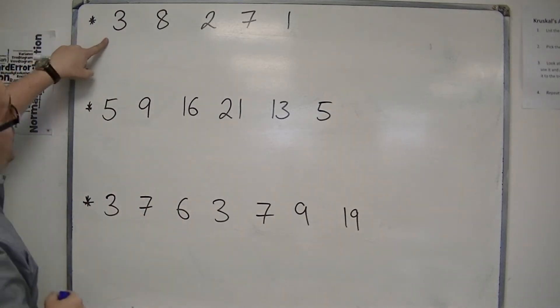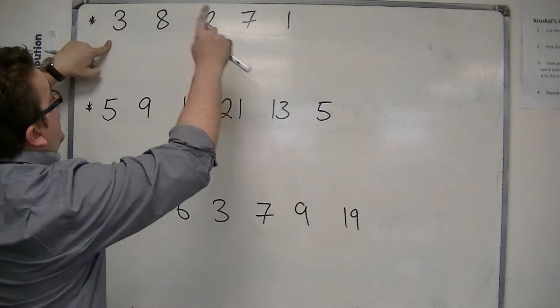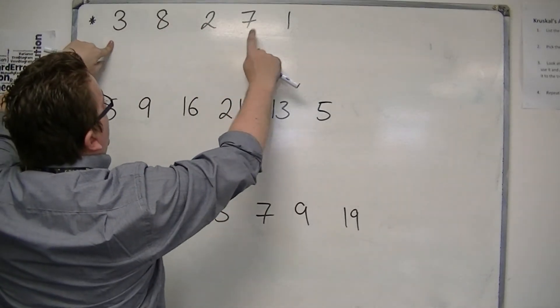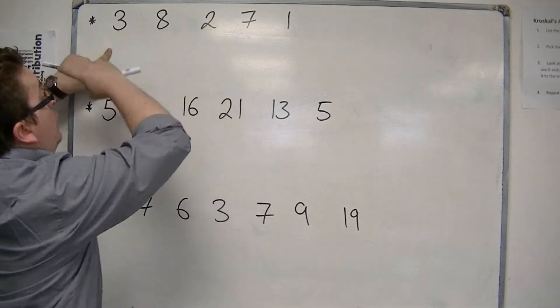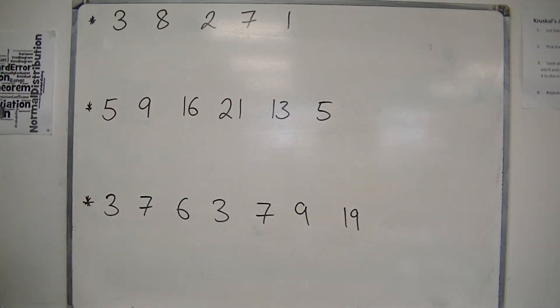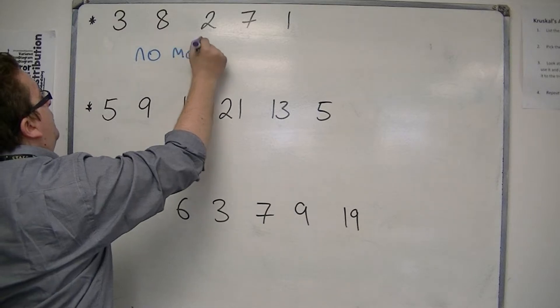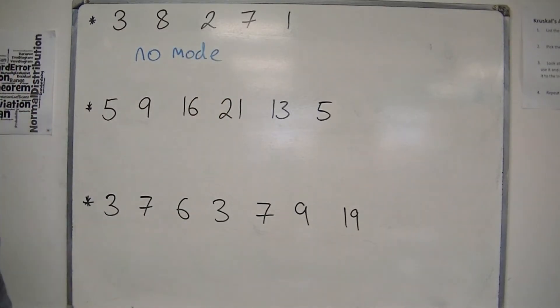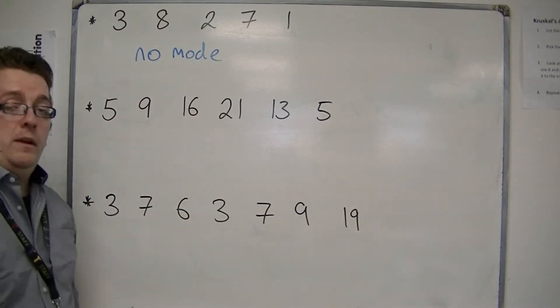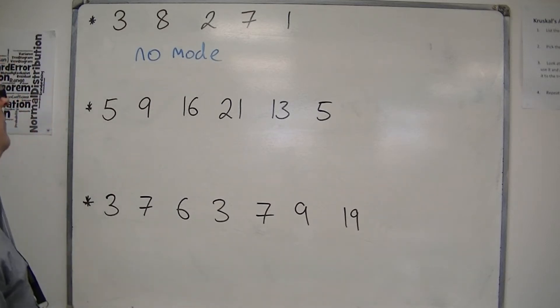And in our first case, what you can see is that we've got one of each of these. So there is no number that repeats itself. So in this case, there is no mode for this set of data. The mode would not be an appropriate average because no number is repeated.